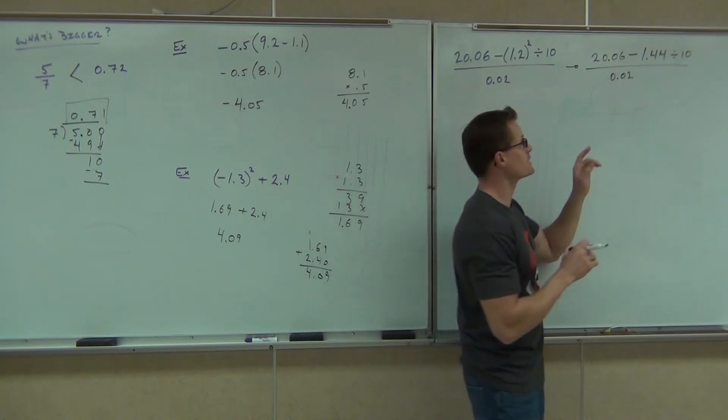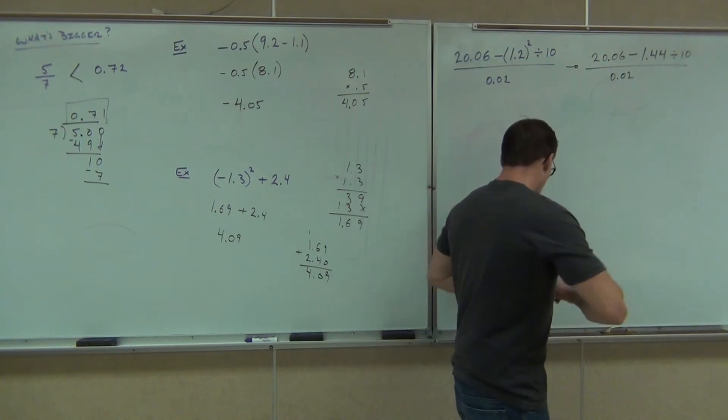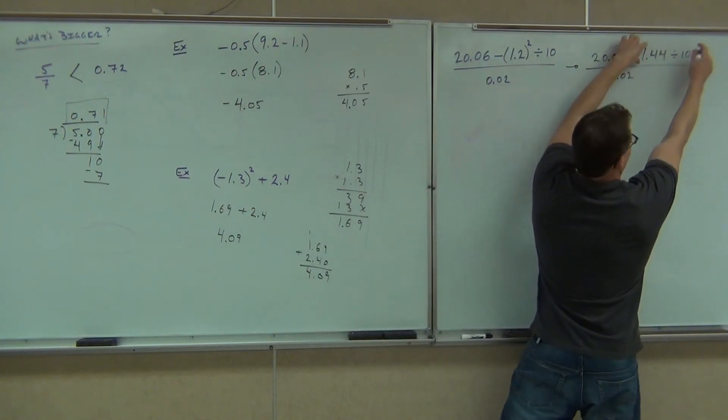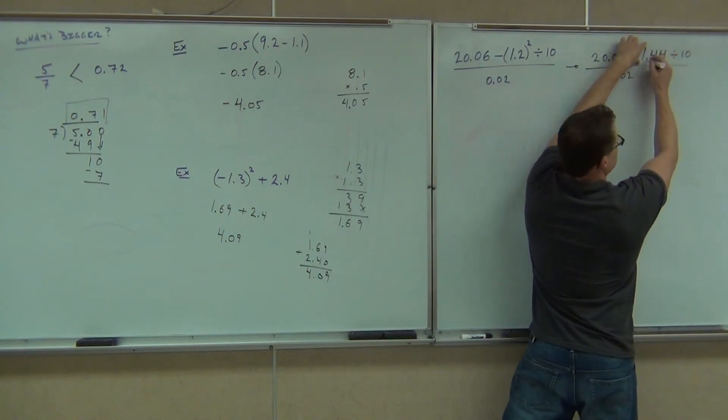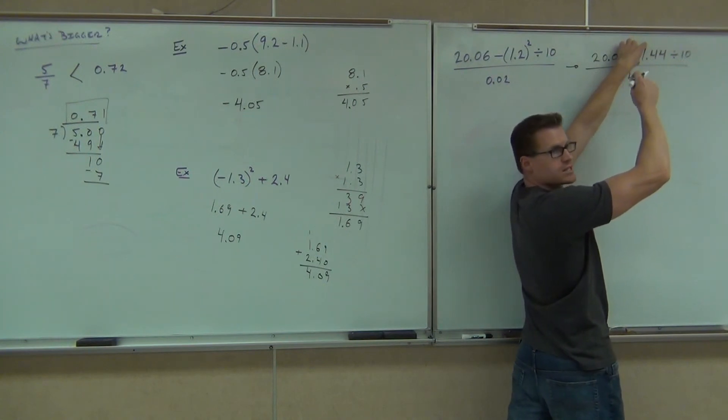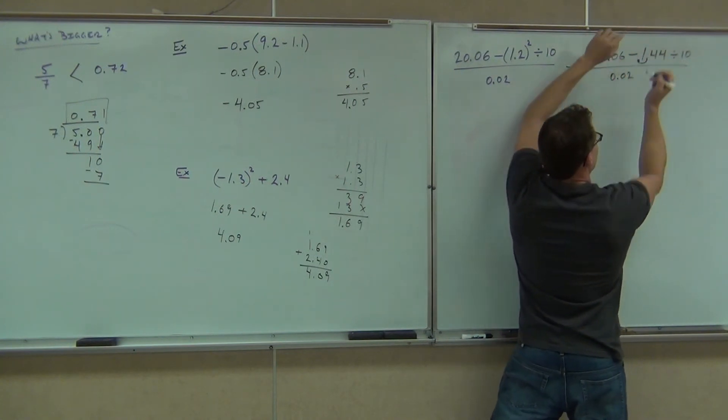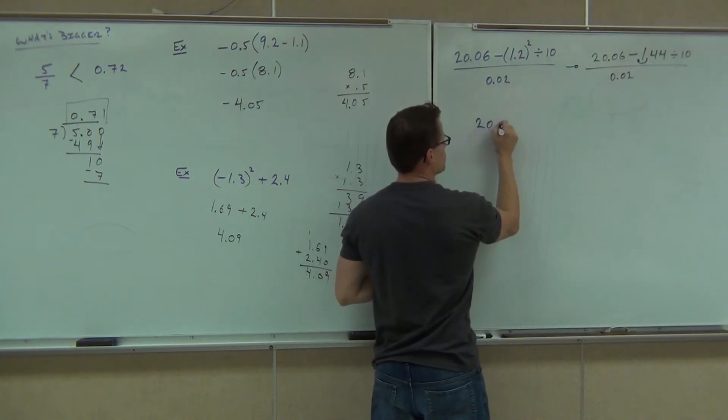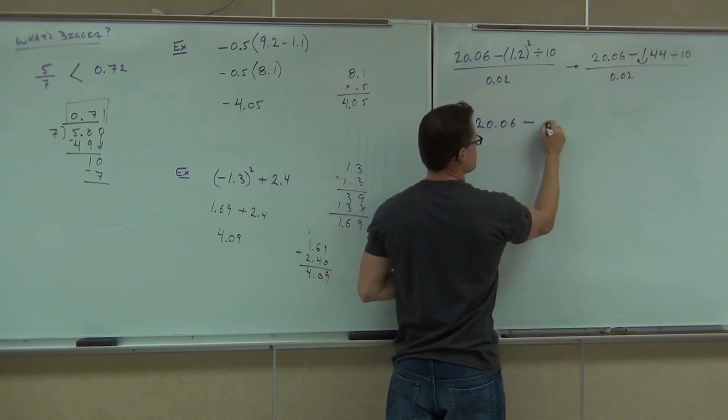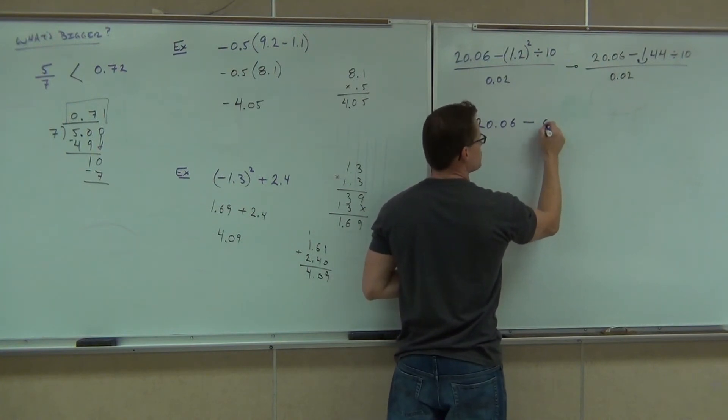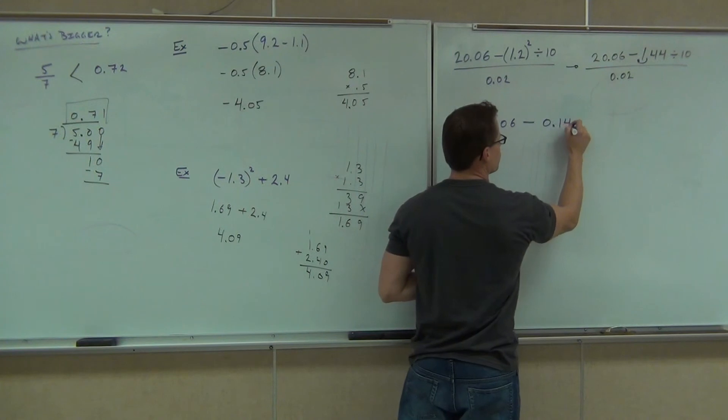Okay, so if you're dividing by 10, look what's going to happen. 1.44 divided by 10 says, oh, this little section, I'm going to take this decimal and move it right or left? Left. Times by 10 would be right. Divide by 10 is left. So this is 20.06 minus, I'm going to put a 0 up there just so we see the decimal, 0.144.